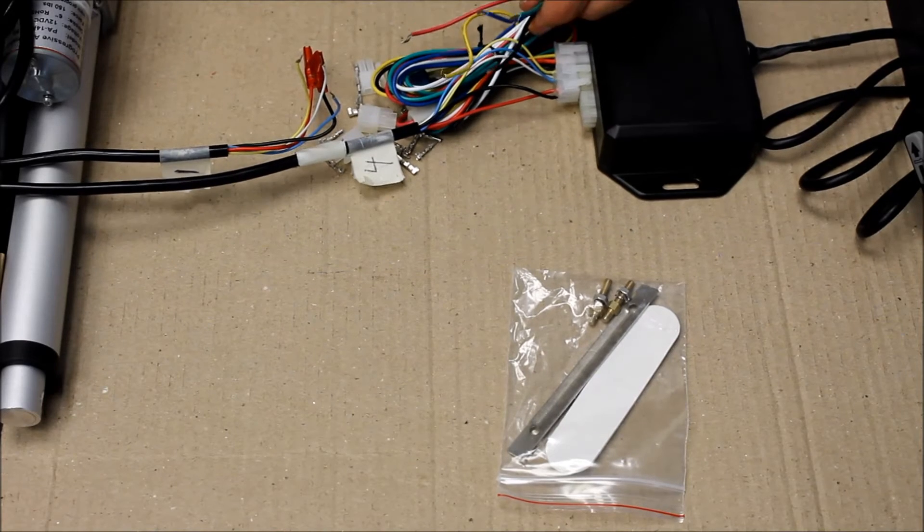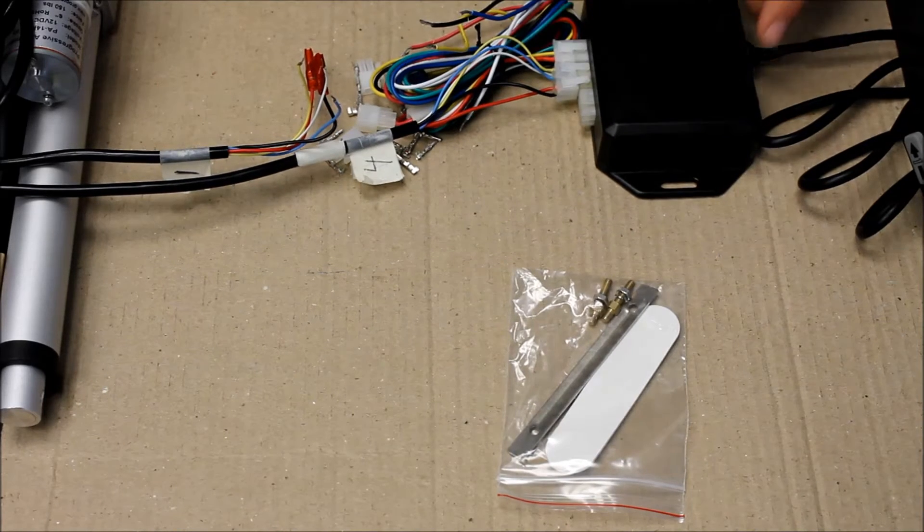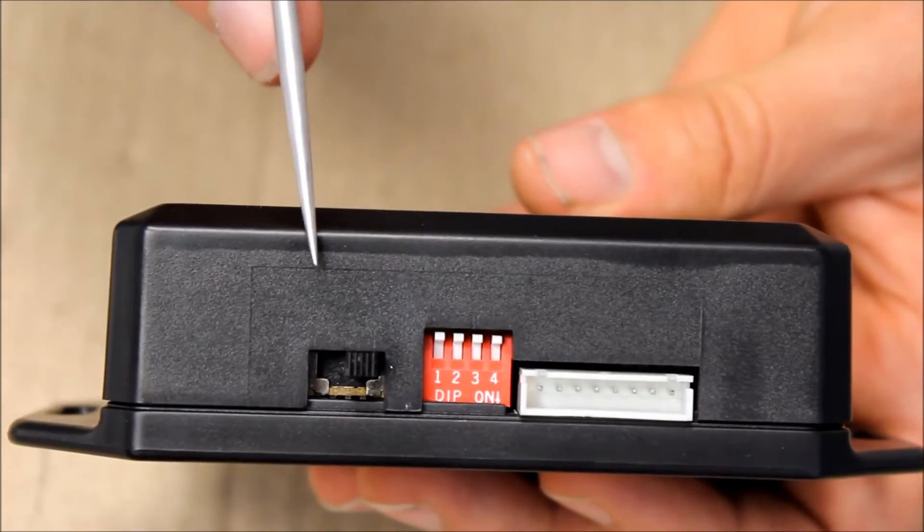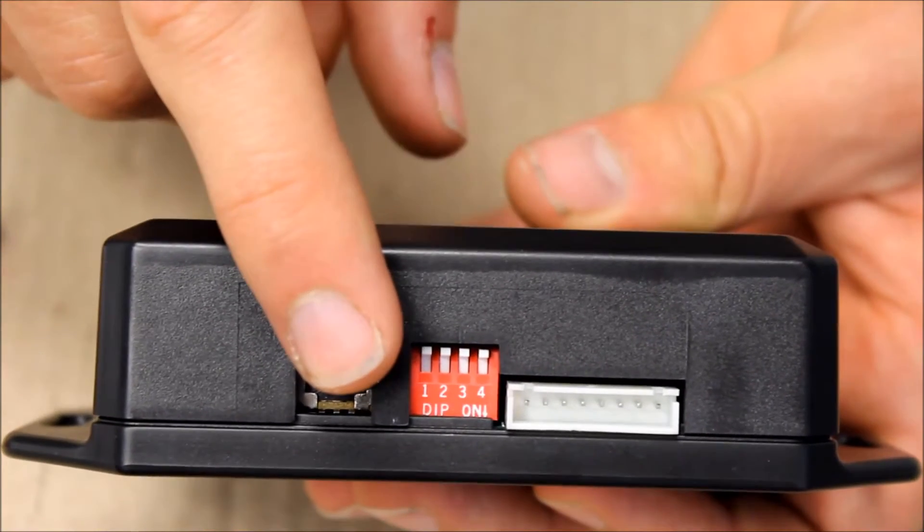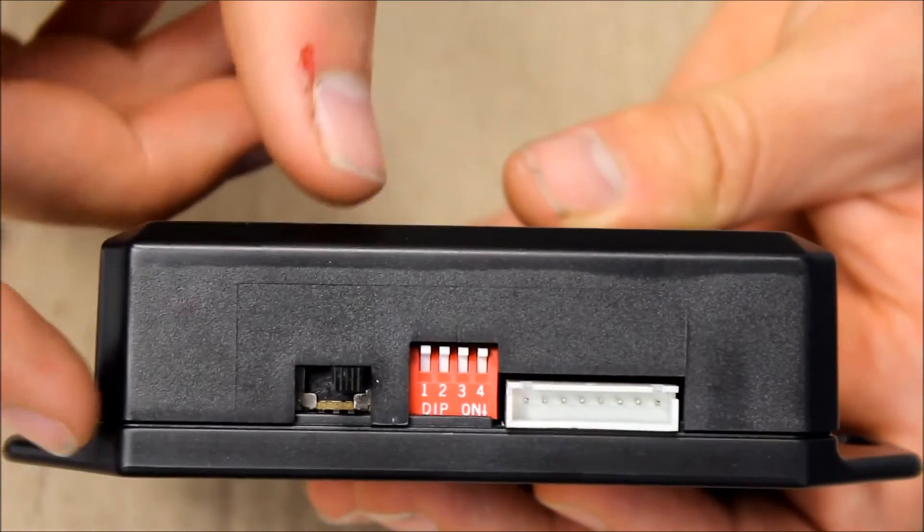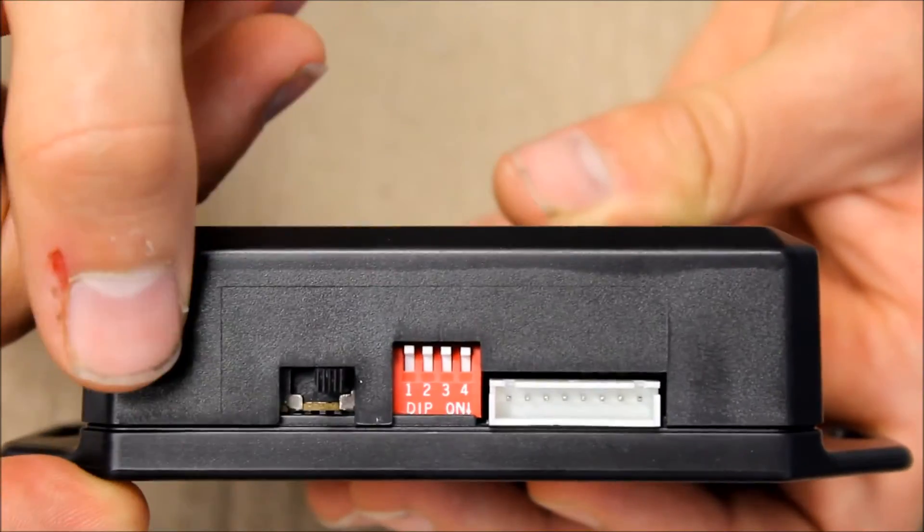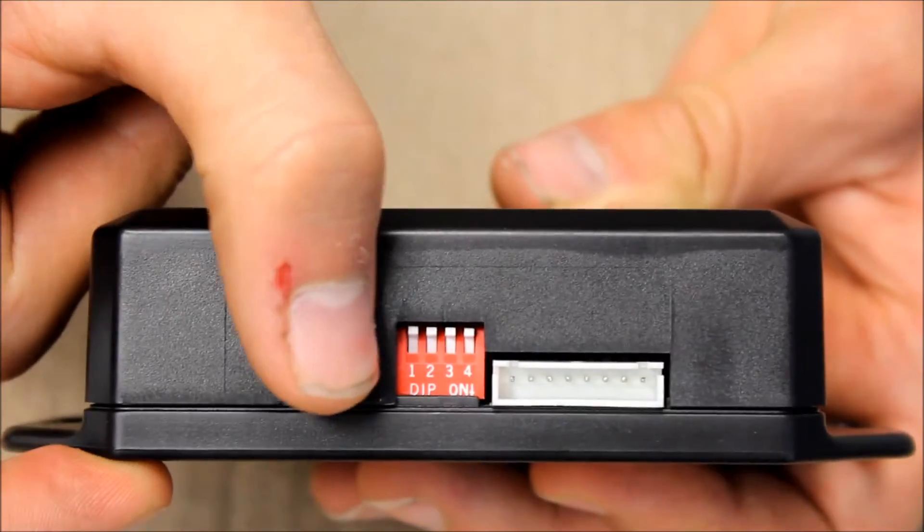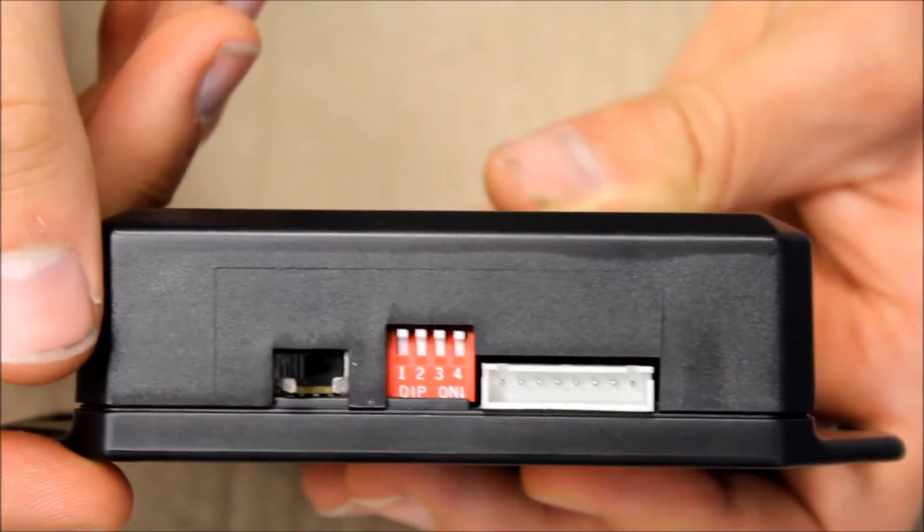Before we deal with all the wires on the wiring harness, we need to set the switches on the back of the control box. These switches are used to set up the PA39. This black switch chooses how many actuators you want to control. Moving it to one side controls one actuator, the center controls both, and the other side controls the other actuator.